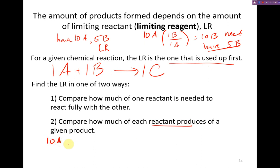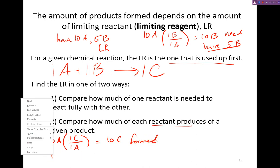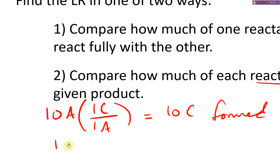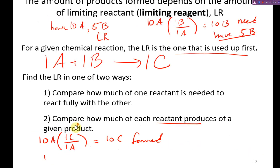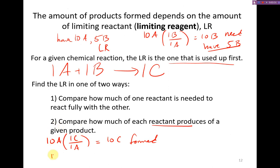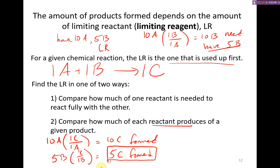The second way is to compare how much of each reactant produces a given product. So I have 10A and it takes one A to form one C molecule, so I could form 10C. But if I use all of my 5B, I'm going to produce one molecule of C for every one B, so I would produce only 5C. Clearly we can't form 10C if we can only form 5 based on the B, and so B is our limiting reactant — which we determined already from the earlier analysis.